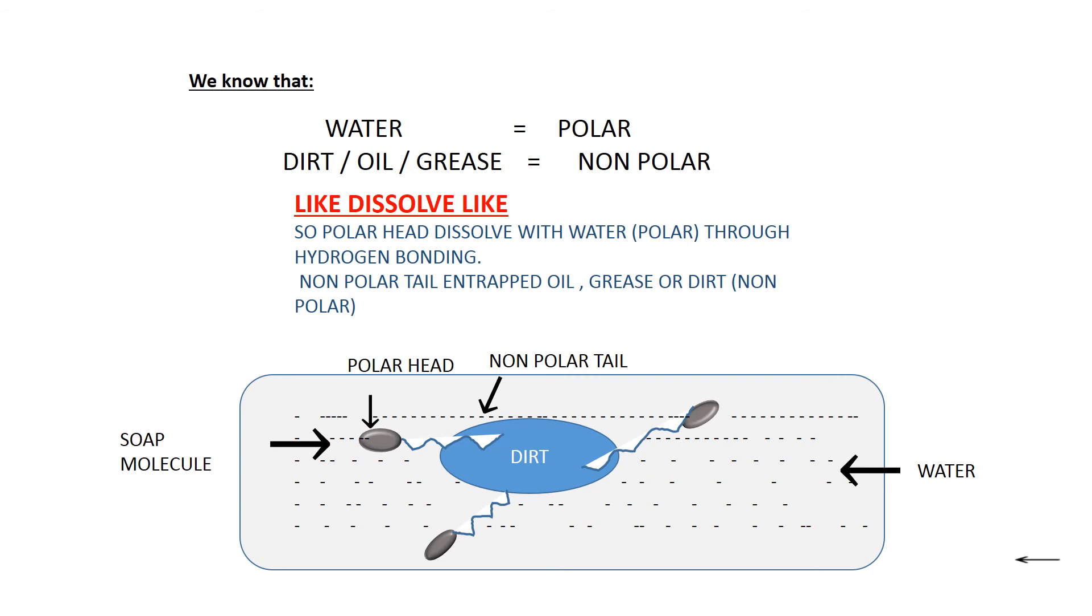As you can see in the diagram, there is a dust particle surrounded by soap molecules. The soap molecules have a polar head and a non-polar tail. The soap's polar head dissolves with water through hydrogen bonding, whereas the non-polar tail of the soap entraps the dirt, grease, and oil. In this way, the cleaning action takes place.